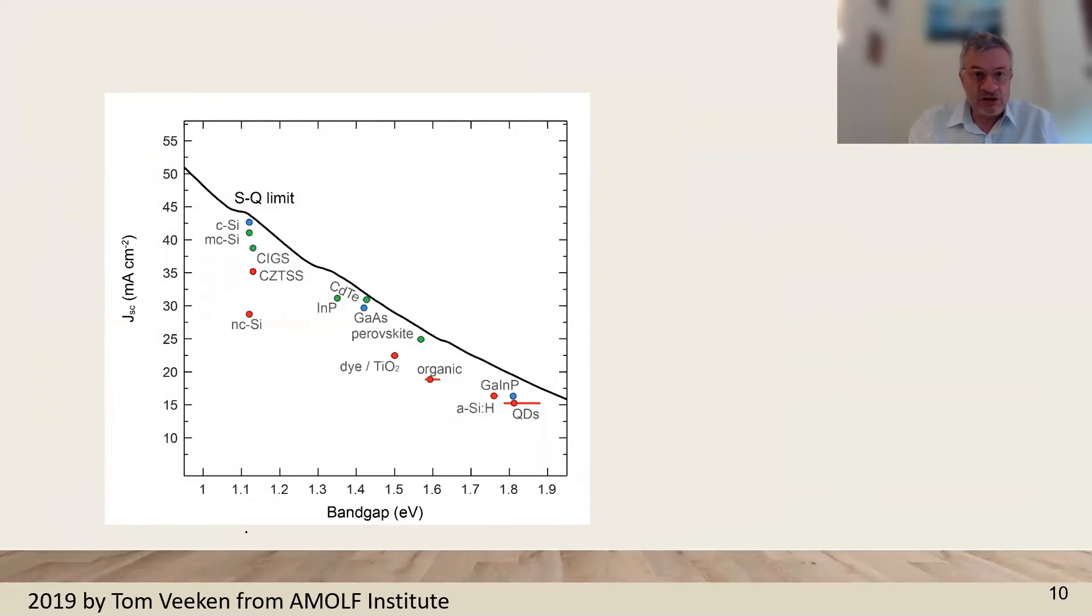This is the result of the maximal photocurrent that we can obtain according to the band gap, and the different technologies at the moment of making this table. This is how they approach in the record cells the maximum photocurrent.